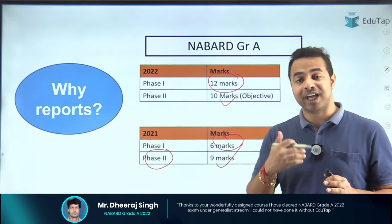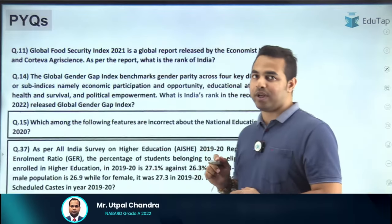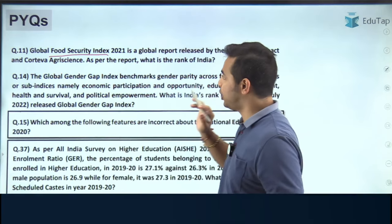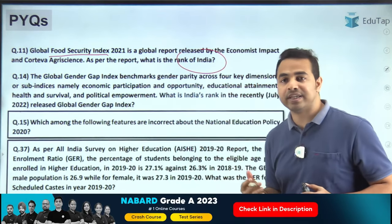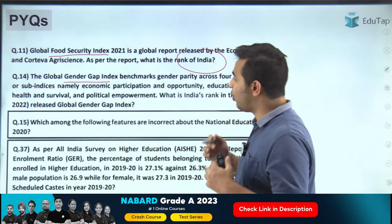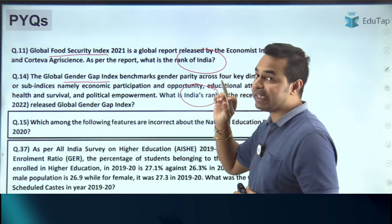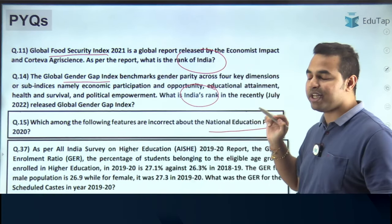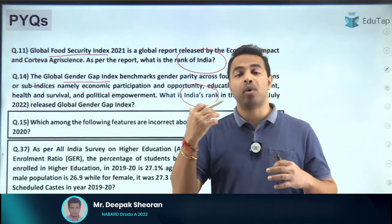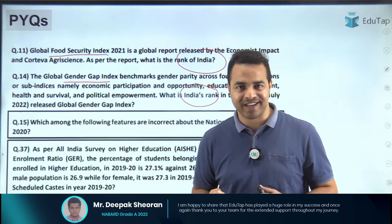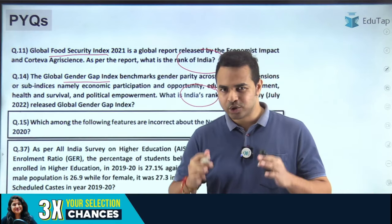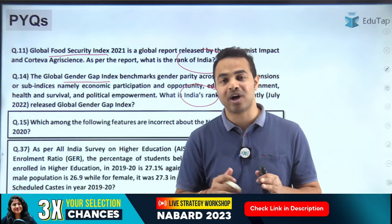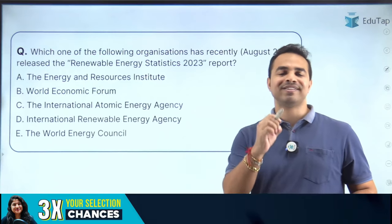Here are some previous year questions: there was a question on the Global Food Security Index asking India's rank, another on the Global Gender Gap Index asking India's rank. Questions on the National Education Policy, ASER report, and Multi-Dimensional Poverty Index have also been asked. That is why today we will cover reports and indices for August 2023.